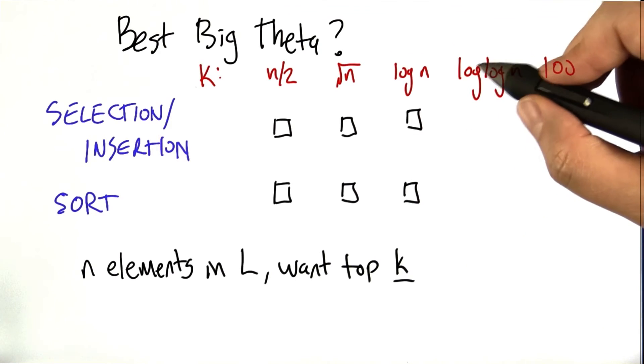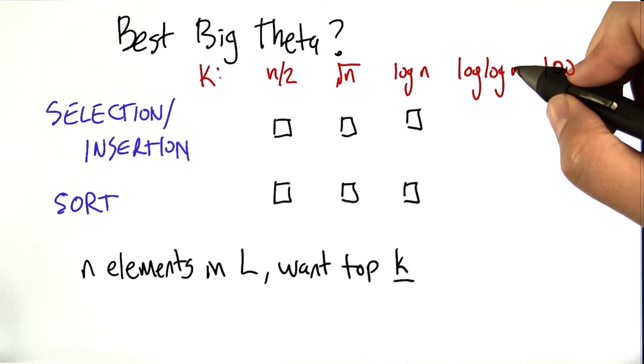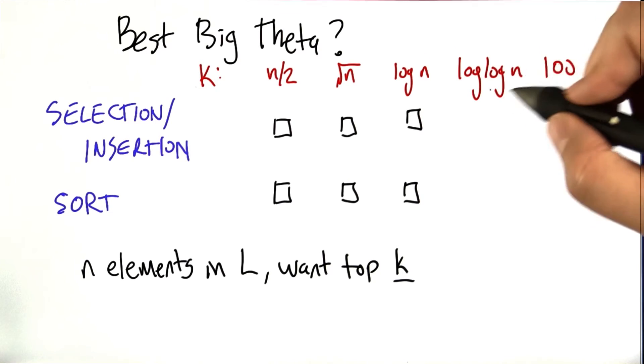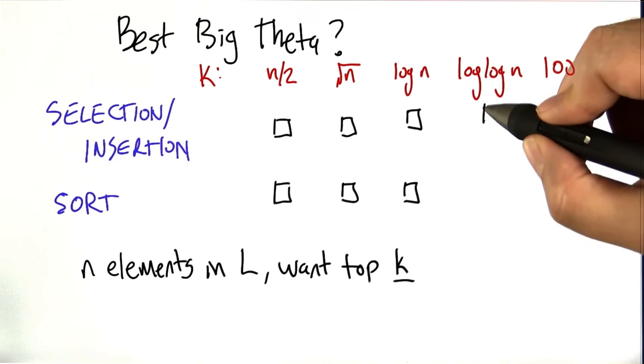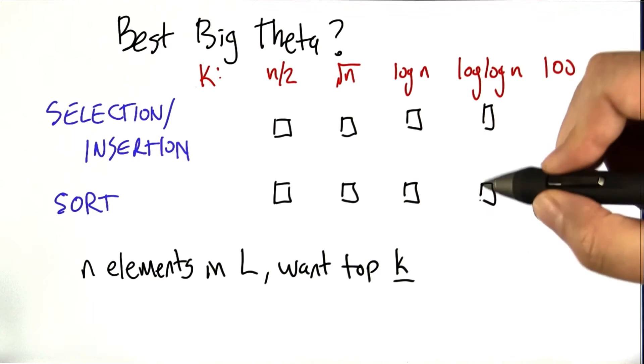This function is the logarithm of the logarithm of n. So as slow growing as logarithm turns out to be, this is even slower growing. The logarithm of the logarithm of n. So which one would you choose in that case?